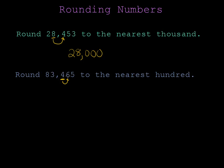And this 6 is greater than or equal to 5, and that tells me that I'm going to have to bump this 4 up. So far I have 83,000 and I bumped the 4 up to a 5, and I still need two zeros to hold my place value. So 83,465 would round to 83,500.